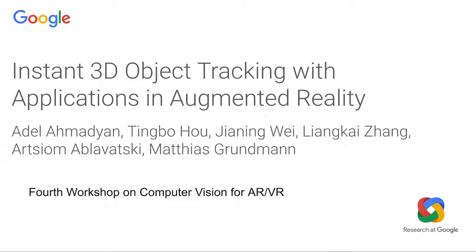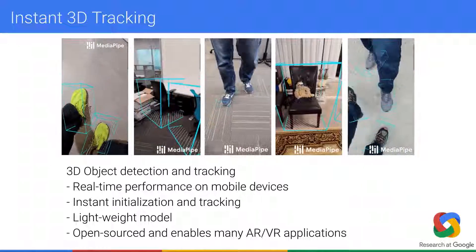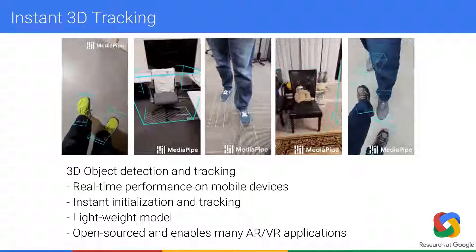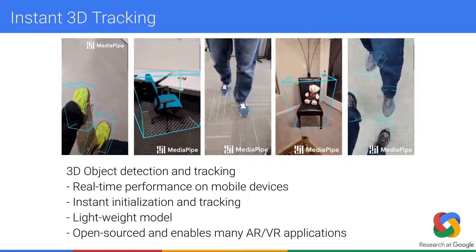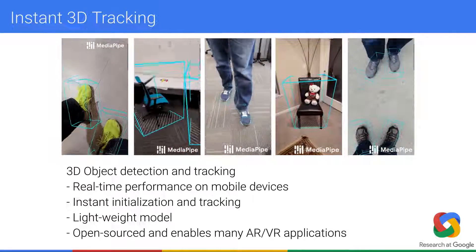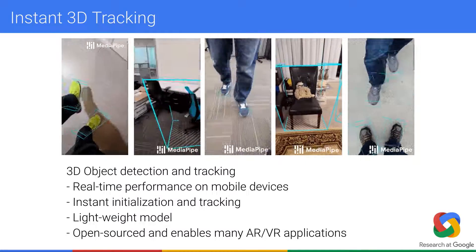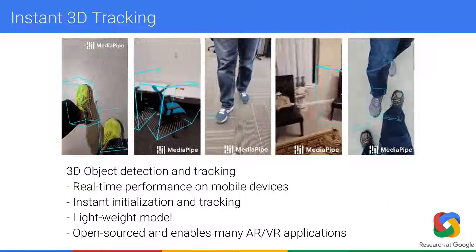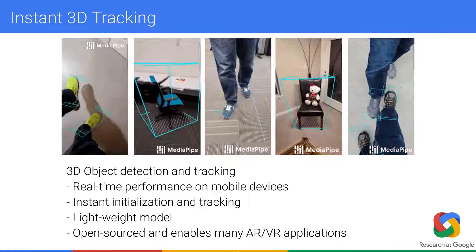We present Instant 3D Object Tracking with applications in augmented reality. We introduce a system for detecting an object's 3D bounding box and tracking it in video frames. Our system performs in real time on a wide range of mobile devices. It initializes and tracks instantly without requiring any paradox-inducing motion. The model itself is very lightweight. We open source the model and tracking system, hoping it can be beneficial to the AR-VR community.